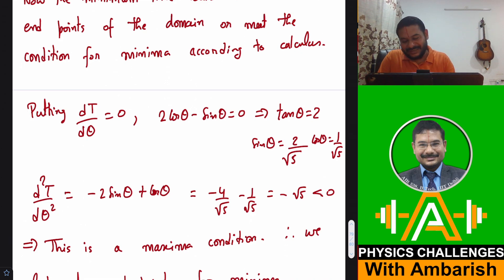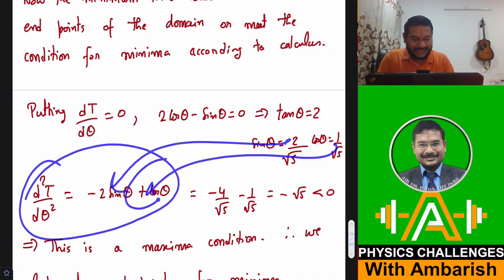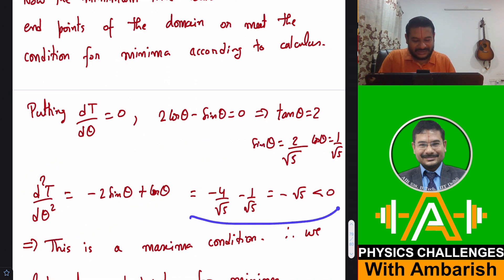So is this a condition for minimum or maximum? You take the second derivative and put the value of sin θ and cos θ and it turns out that this is minus 3 by root 5. You see the second derivative is negative. Second derivative negative means it is a condition for maxima and not a minima.